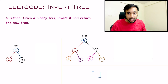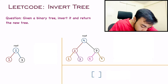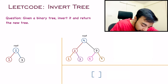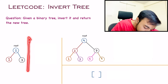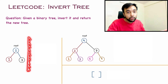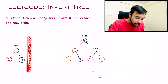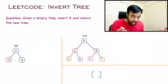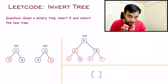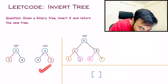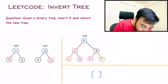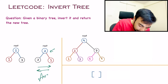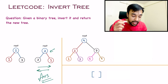Let us look at our first test case. You can see that you have a binary tree in front of you and you have to invert it. Inverting actually means that you can assume there is a mirror right over here and then you have to see its reflection. Both of these elements will get flipped, so the root remains at the same place and both child nodes have swapped. This flipped tree will be your answer and you have to return it.